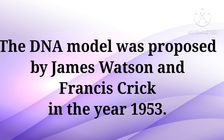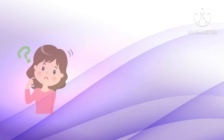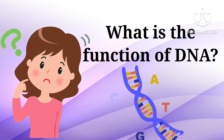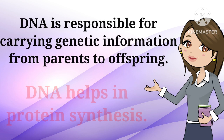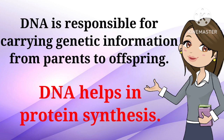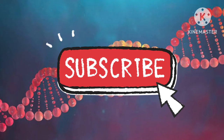This double helical structure of DNA model was proposed by James Watson and Francis Crick in the year 1953. DNA is responsible for carrying genetic information from parents to offsprings, and it also helps in protein synthesis.